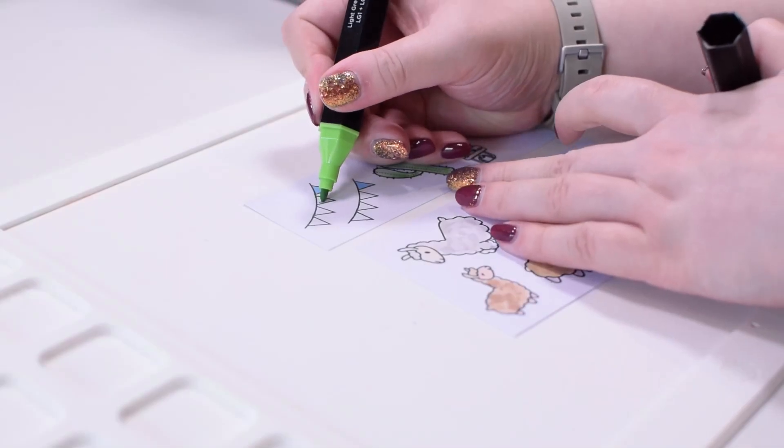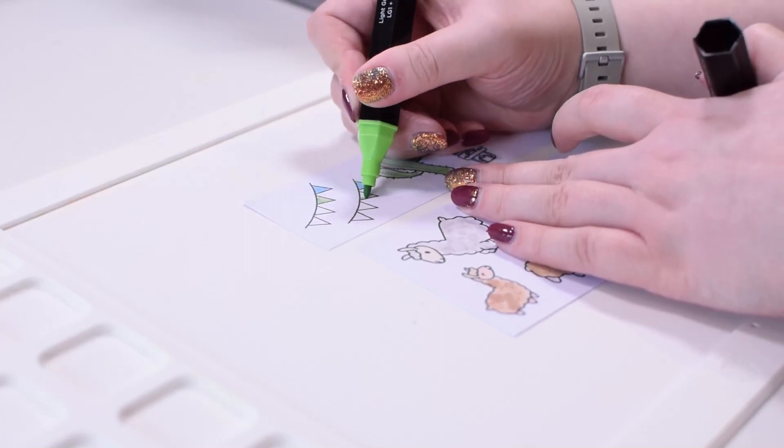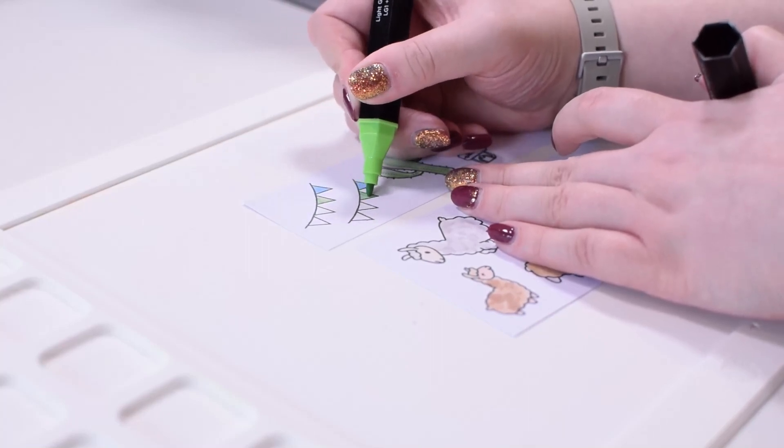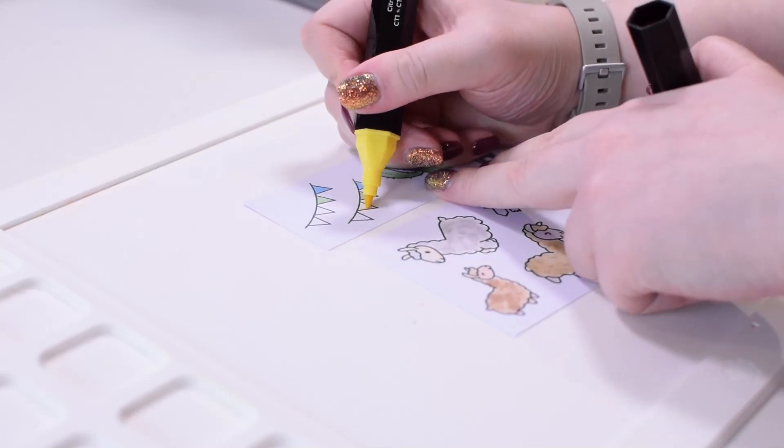Now for a pop of color, I'm using some brighter blues, greens, yellows, and reds to color in the banners that are gonna go at the top of my card. I've also used these same colors to do the accents on the suitcase and the signposts.